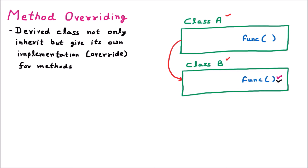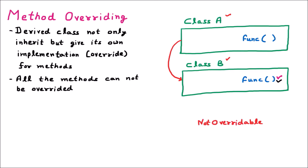But we cannot override all the methods. If in the parent class we use the keyword 'not overridable' before the method, then such methods cannot be overridden. So all methods cannot be overridden. If the parent class wants that its method should be overridden, then the parent class must use the keyword 'overridable' before the function.